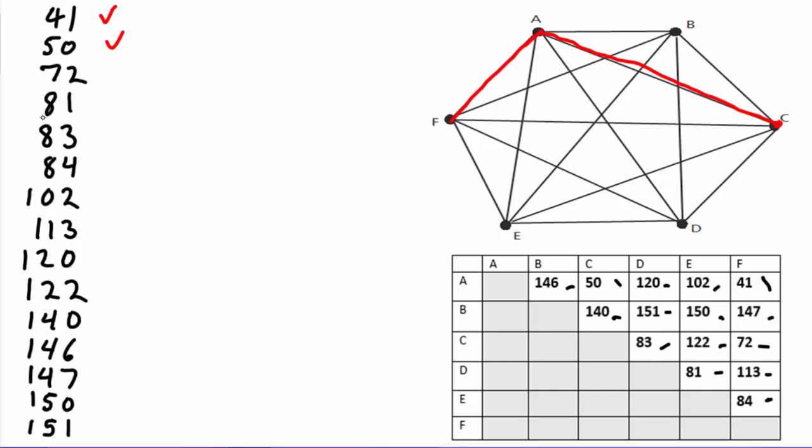What about 72? Well, 72 would correspond to edge CF in our table, and you can see that choosing CF would give us a circuit CFAC. So we cannot choose that. What about 81? 81 corresponds to the edge DE, and we can use that. 83 would correspond to the edge CD, and that also is fine.